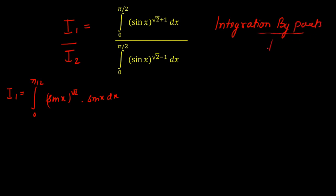So applying integration by parts, I'll get the relationship between I1 and I2. Once I get that relationship, I can easily determine the ratio the question is asking for. So let's say sin(x)^(√2) is my first function and sin(x) is my second function, and I'm integrating by parts.